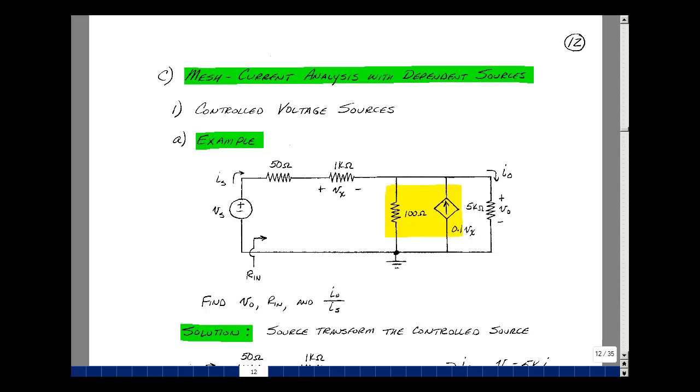Consider the following example where I've got one independent voltage source, four resistances, and one controlled source. This controlled source is controlled by the voltage across this resistance. I'm going to solve for V out here, the resistance looking in, which is the ratio of this voltage to this current, and then the ratio of the output current to the input current.